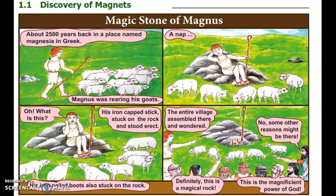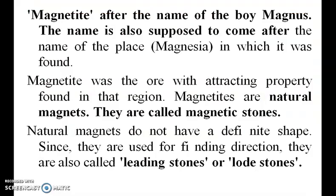That rock was called a magnet, named after the boy Magnus. The name is also supposed to come from the place Magnesia, where it was found. The magnetite was the ore with attractive properties found in that region.